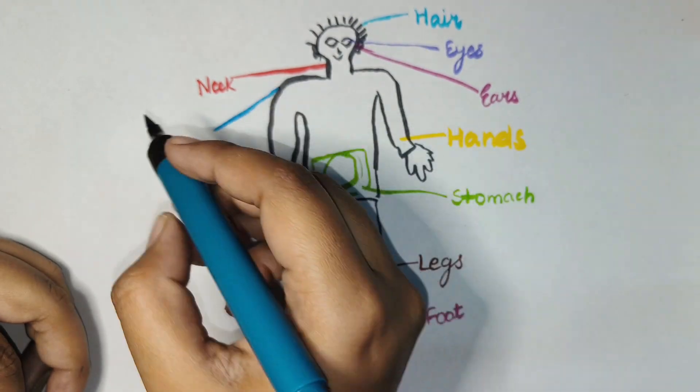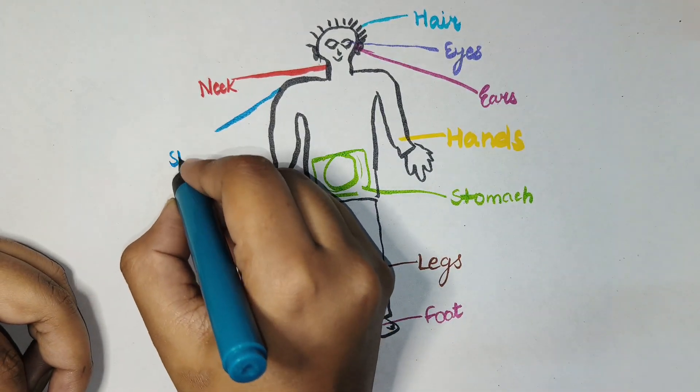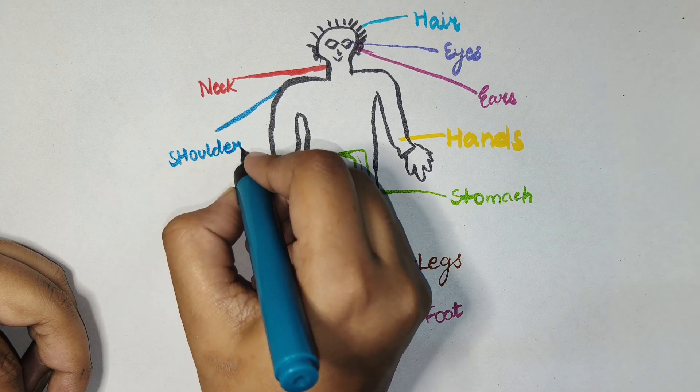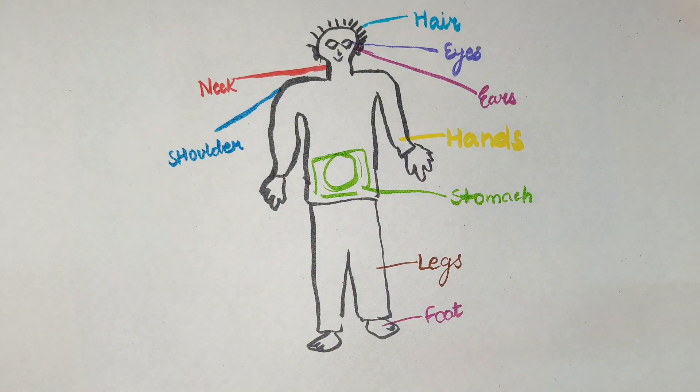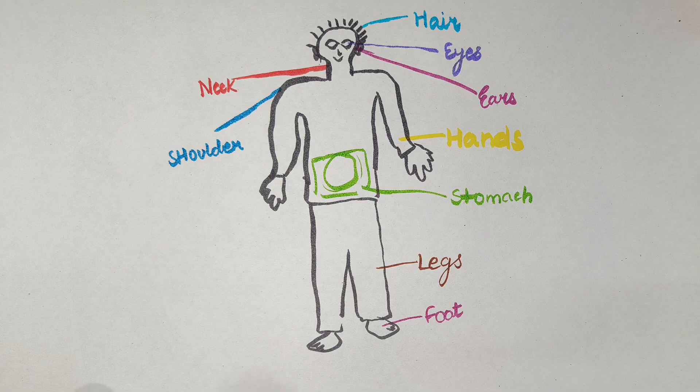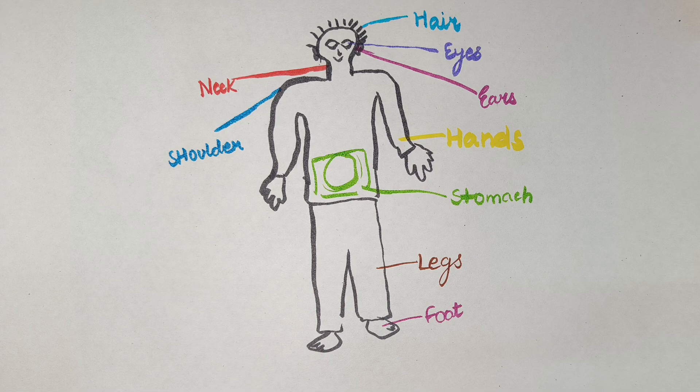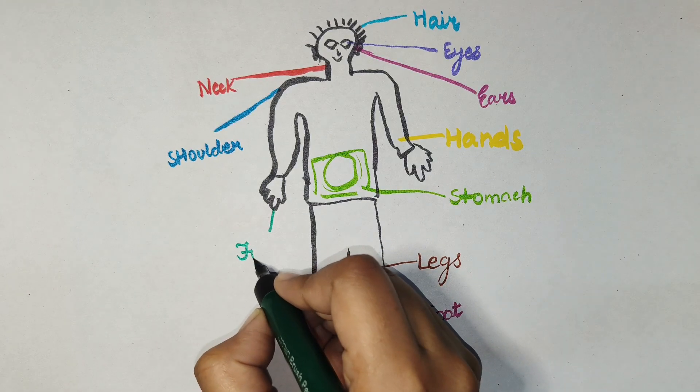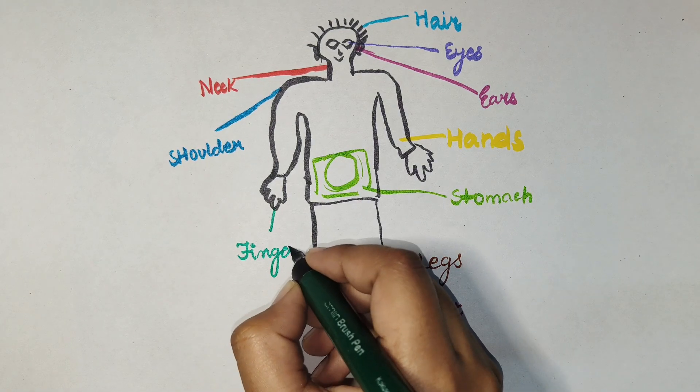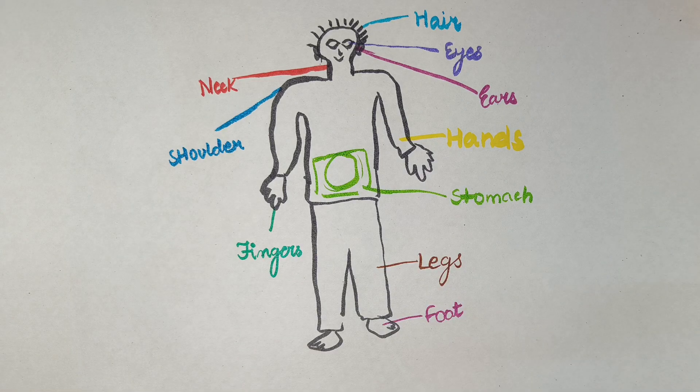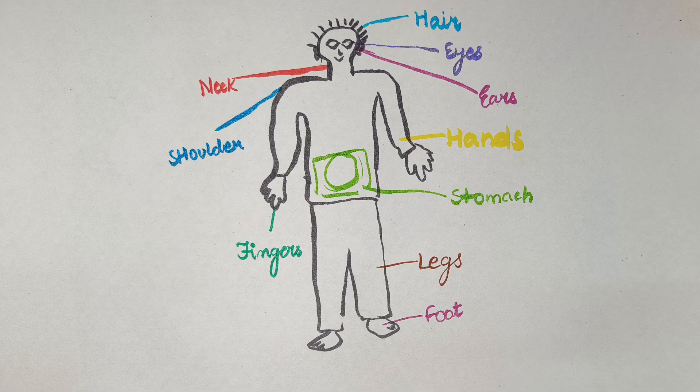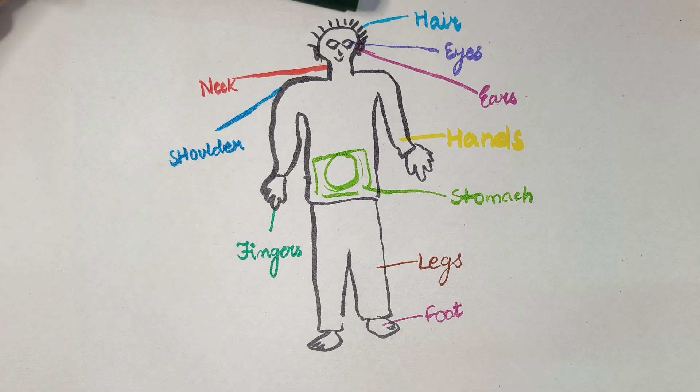These are shoulders. S-H-O-U-L-D-E-R, shoulder. These are shoulders. And these are what? Fingers. F-I-N-G-E-R-S, fingers. These are fingers.